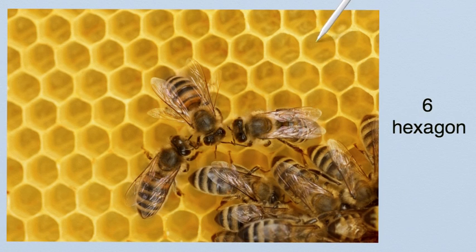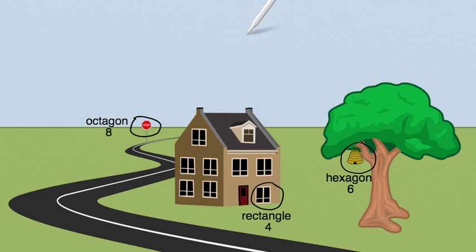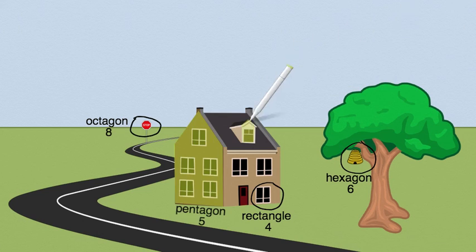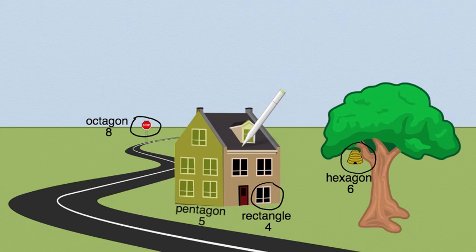Let's go back to our main picture and see if we can find any more polygons. You've done a great job searching through these images trying to find polygons. I have one last challenge for you: can you find two pentagons in this picture? Remember, a pentagon has to have five sides. We have two pentagons. Our first pentagon is this side of the house. Our second pentagon is this side where we have a window in the roof. So we have two pentagons in this image. Great job!